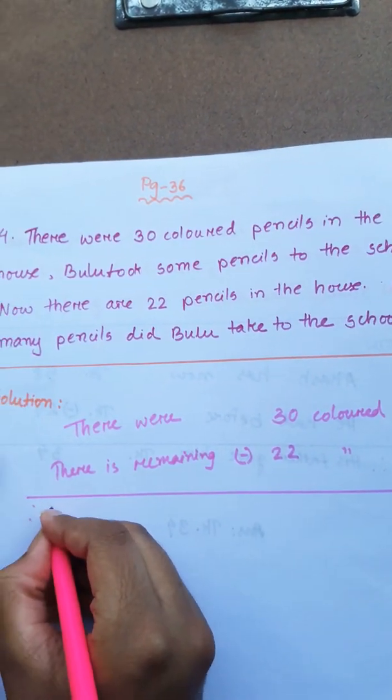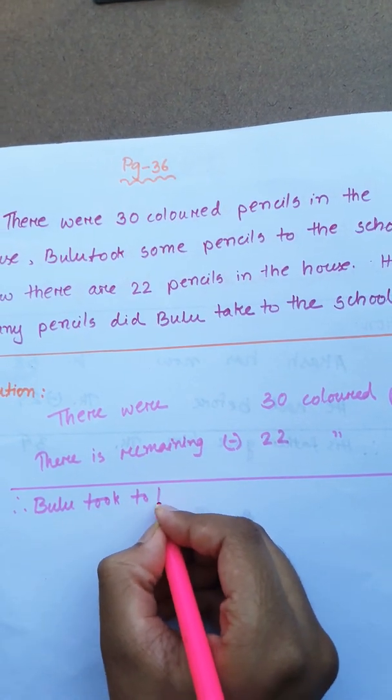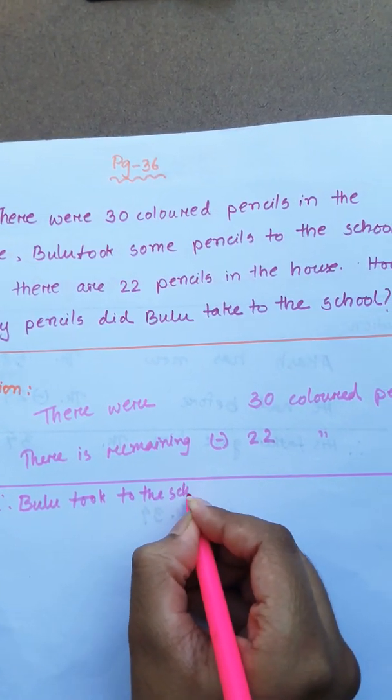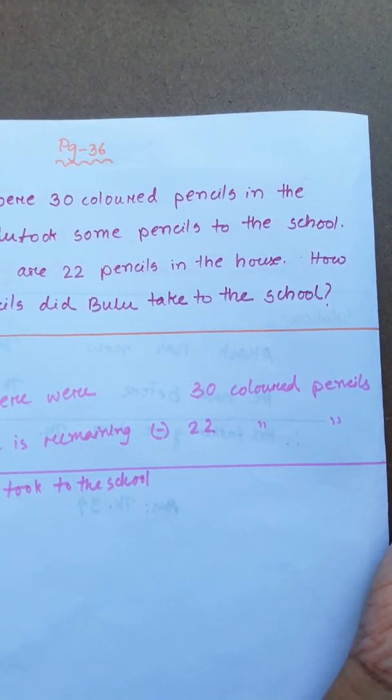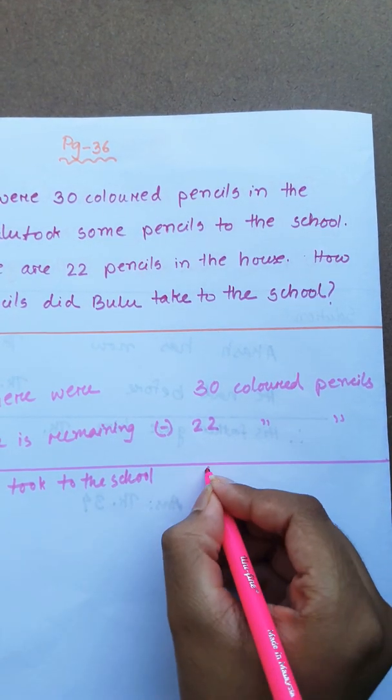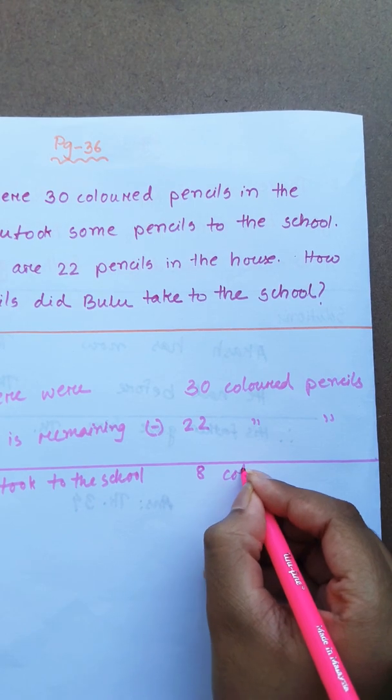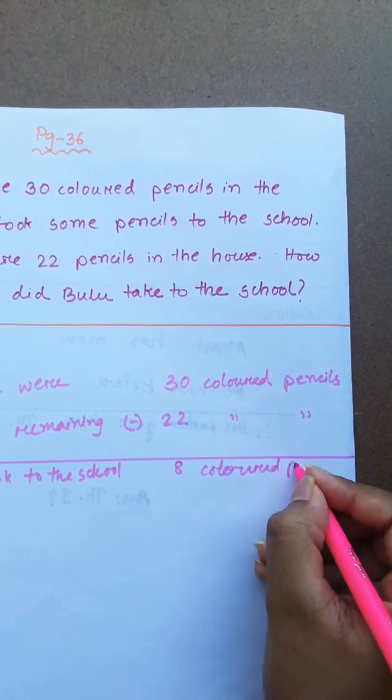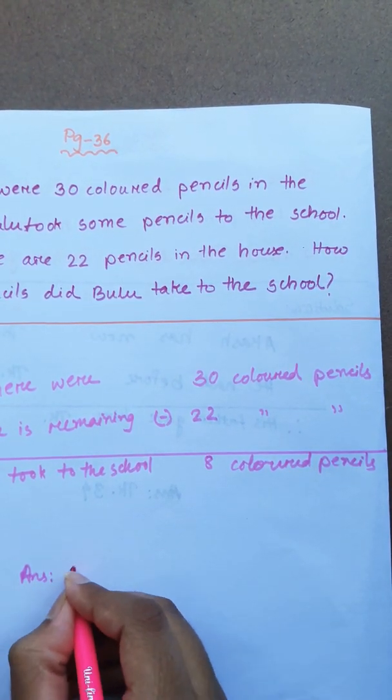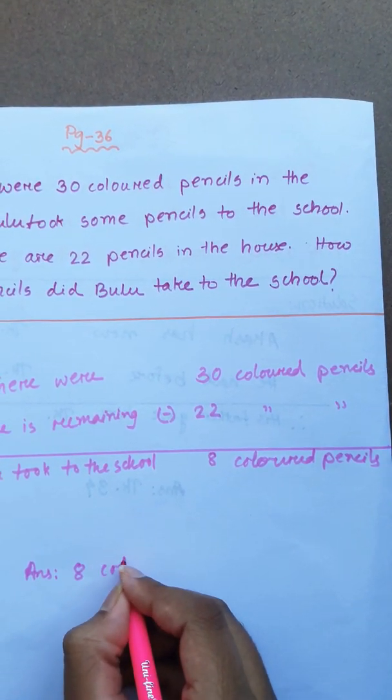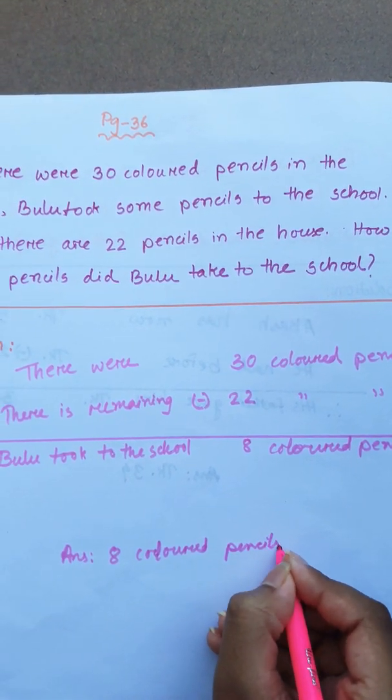There is remaining 22 colored pencils. Therefore, Bulu took to the school 8 colored pencils. So answer: 8 colored pencils.